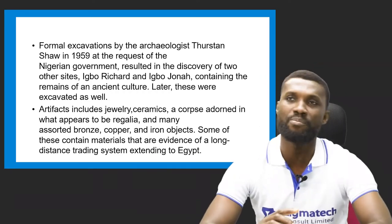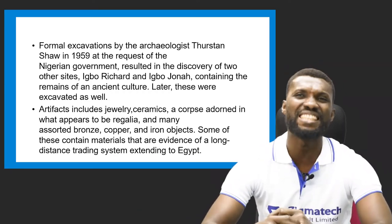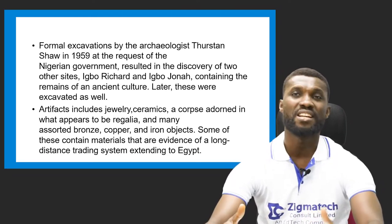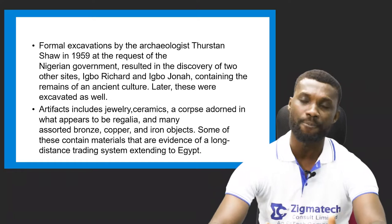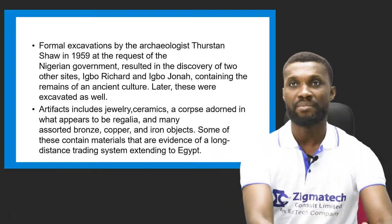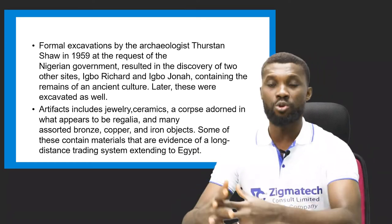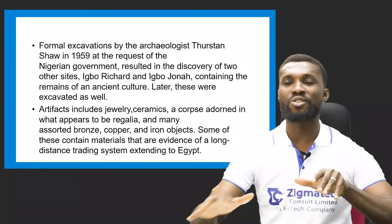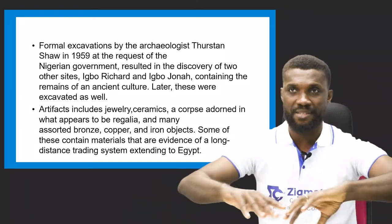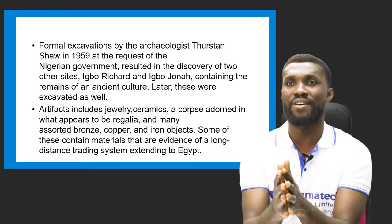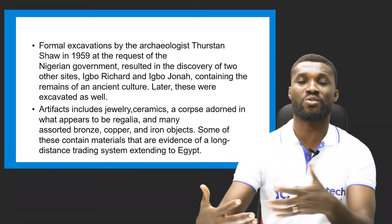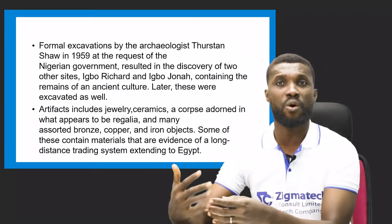Formal excavation by archaeologist Thurstan Shaw in 1959, at the request of the Nigerian government, resulted in the discovery of two other sites: Igbo Richard and Igbo Jonah. These are three brothers — Igbo Isaiah being the elder brother. Within that community, they discovered different artifacts in different locations. Some of these artifacts contain the remains of the ancient culture and were later excavated as well.